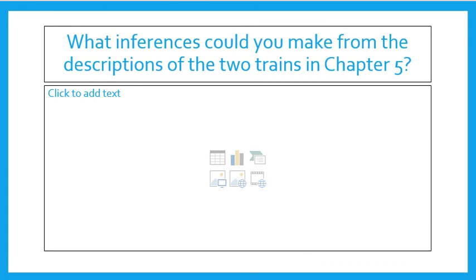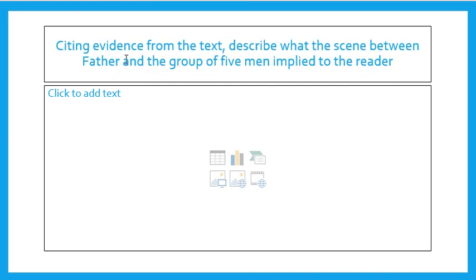What inferences can you make from the descriptions of the two trains in chapter 5? Again, where are they going? How do you know that? I don't care what you think — I want to know why you think it. What made you think whatever it was that you thought. Citing evidence from the text — that's important.